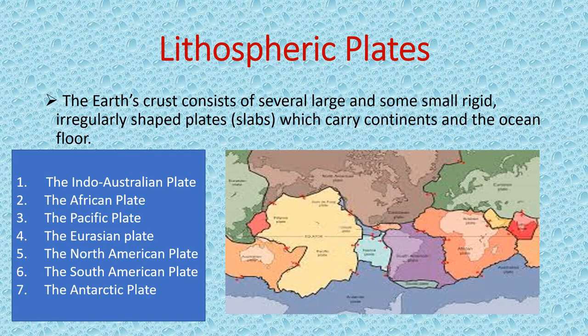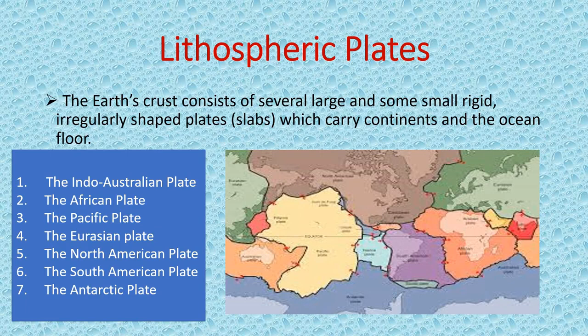These slabs or plates carry continents and oceanic floors and are known as lithospheric plates. In this picture, you will see a black boundary line — our whole earth is divided into seven big plates, and this black boundary shows the lithospheric boundaries. There are a total of seven lithospheric plates.